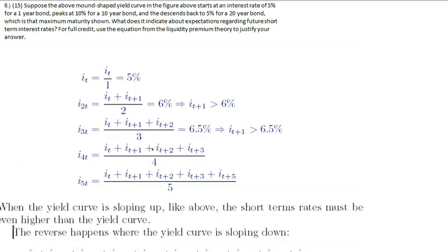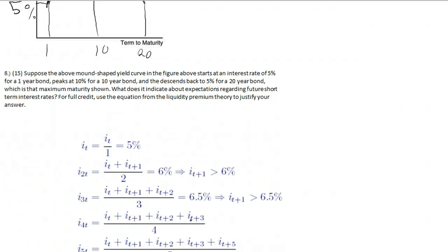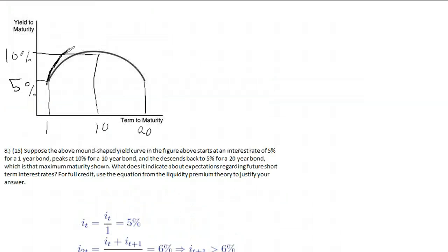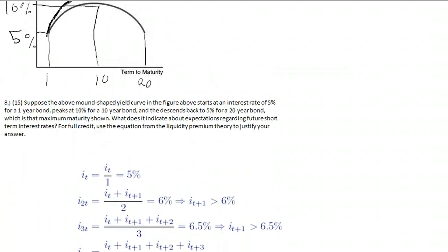Likewise, for the 4-year bond, the average of all four terms has to be higher than the average of all three, because the average of all four is the 4-year rate and the average of just three is the 3-year rate. That means the future short-term rate must be higher than the corresponding multi-year rate, i.e. i sub 4t. So i sub t+3 must be higher than i sub 4t, which means again the short-term rates are higher than the multi-year rates, and so on.